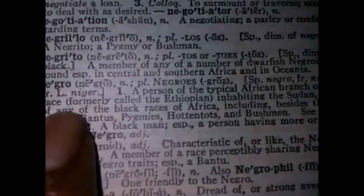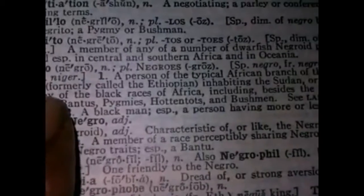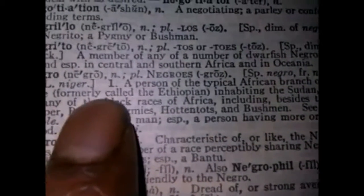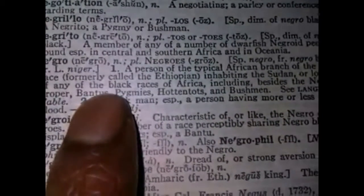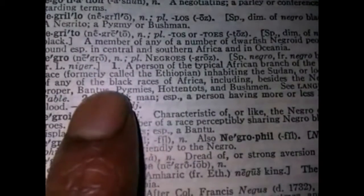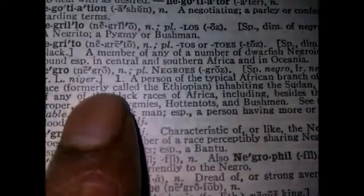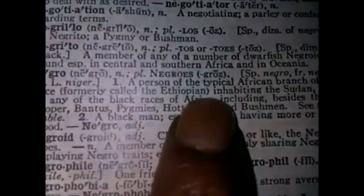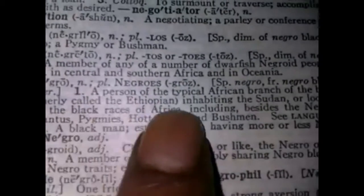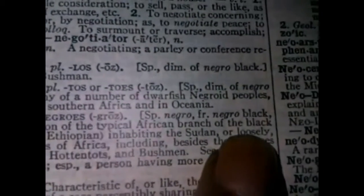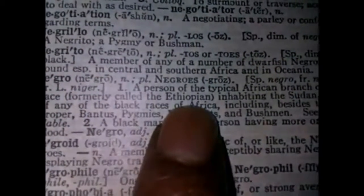They don't talk like this anymore — it was too telling. They never thought that our people would read and study and seek the truth about who they are. So when we started to read these things and use it as proof, this is where they had to upgrade what they were saying. It says: 'Formally called the Ethiopian.' A person of the typical African branch of the black race, formerly called the Ethiopian.